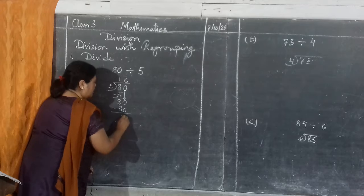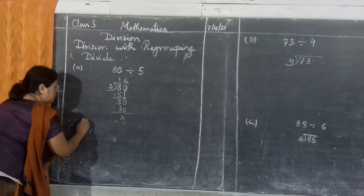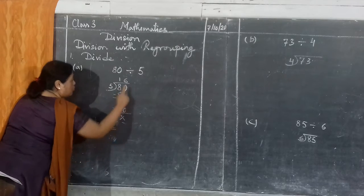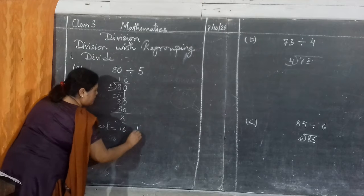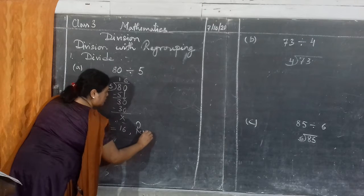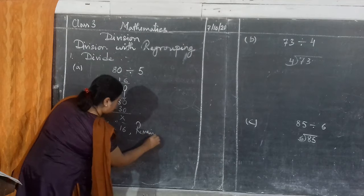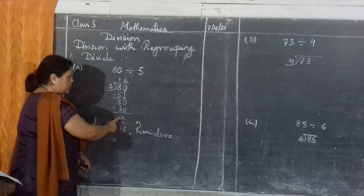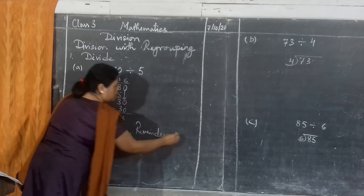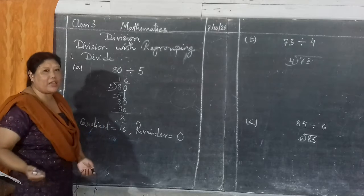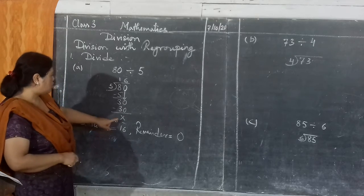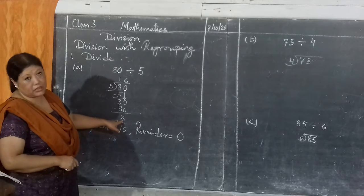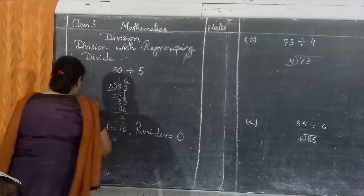So quotient will be 16, and remainder will be - there is nothing, number is not left, so it will be 0. This cross means nothing, so it will be 0. Don't put 0 out here. Always do like this cross sign. Now this one is finished.